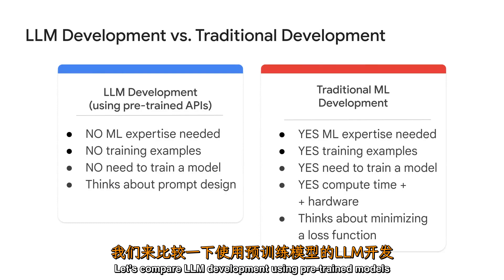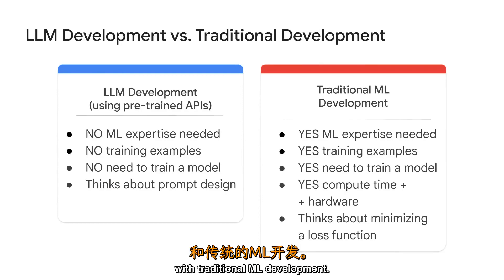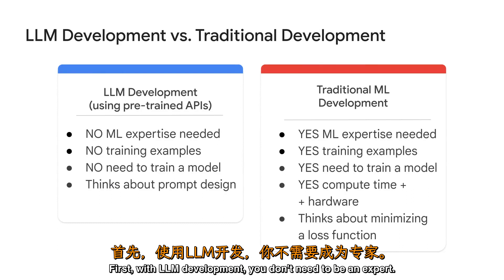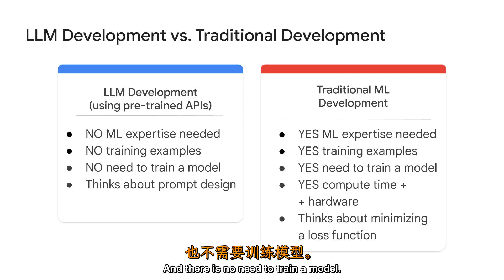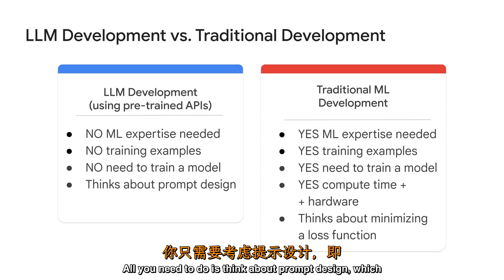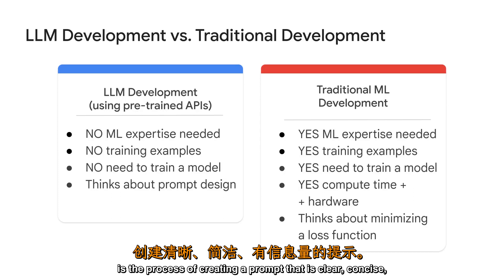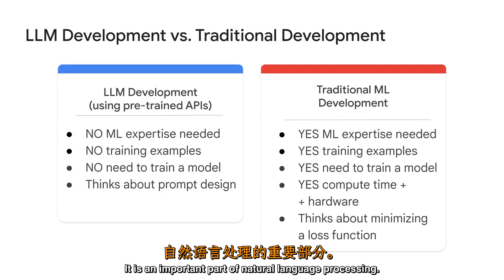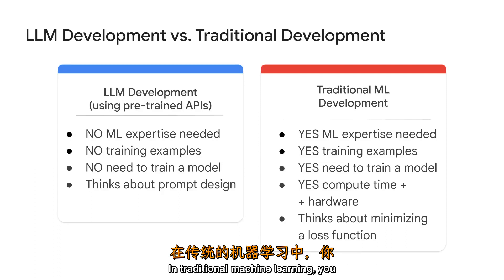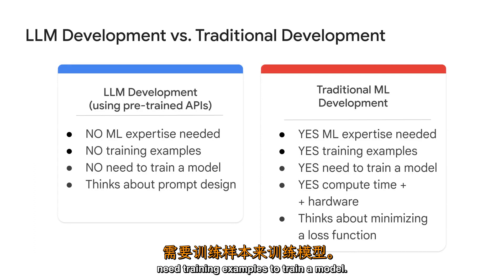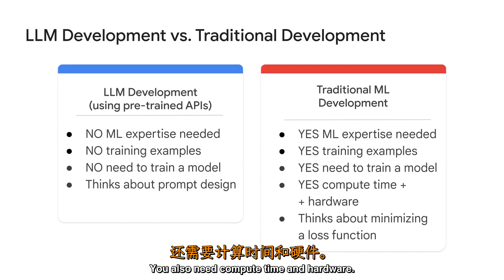Let's compare LLM development using pre-trained models with traditional ML development. With LLM development, you don't need to be an expert, you don't need training examples, and there is no need to train a model. All you need to do is think about prompt design, which is the process of creating a prompt that is clear, concise, and informative — an important part of natural language processing. In traditional machine learning, you need training examples to train a model, as well as compute time and hardware.